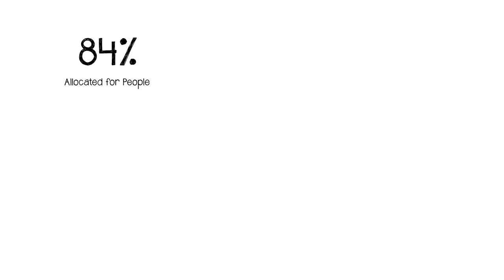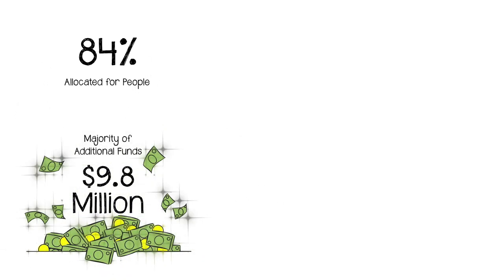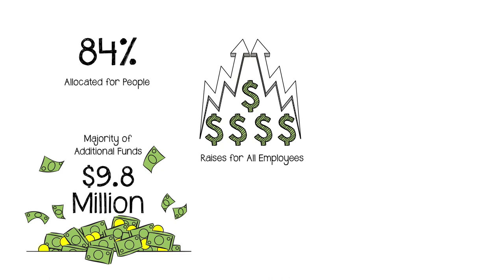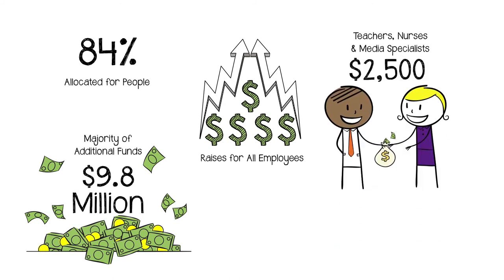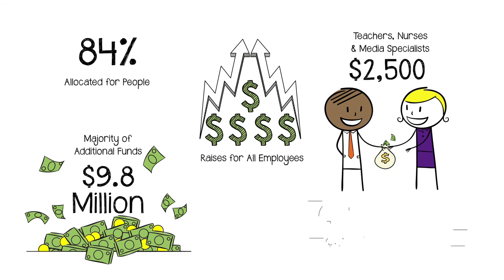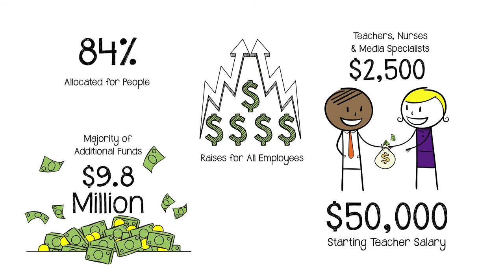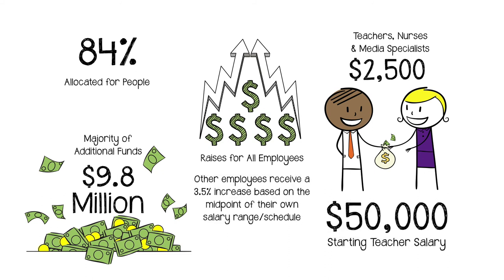Because approximately 84% of the district's budget is allocated for people, the majority of the additional funds — more than $9.8 million — would be used for raises for all employees. All employees on the teacher salary schedule, including teachers, nurses, and media specialists, would receive an increase of $2,500, making ECISD's starting teacher salary $50,000 per year. All other employees would receive a 3.5% increase based on the midpoint of their salary range.